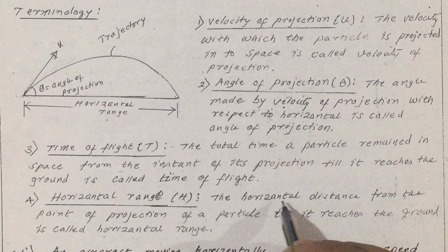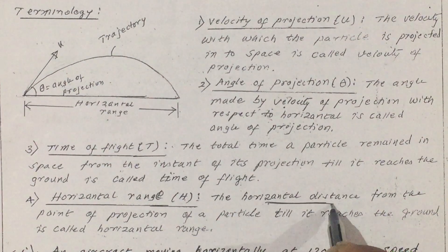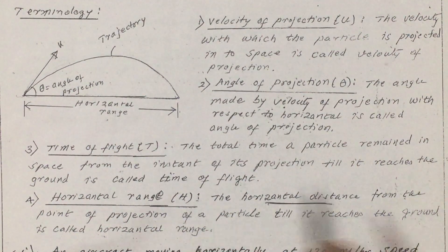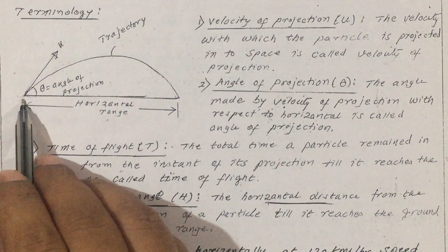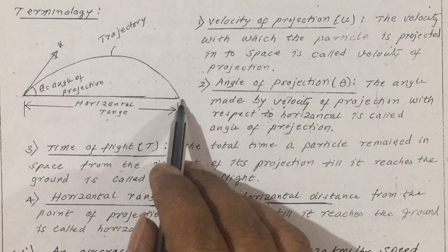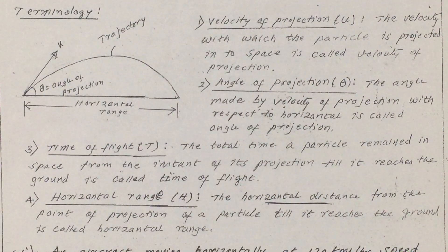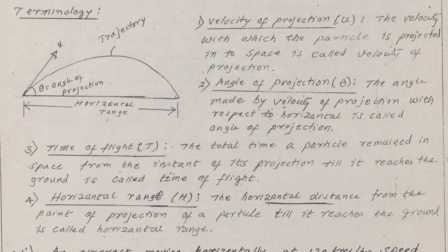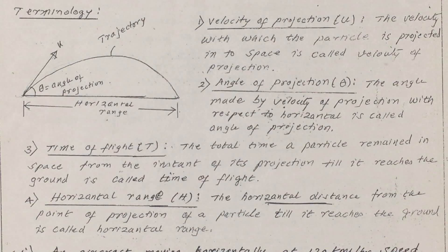The horizontal distance — please remember — the horizontal distance from the point of projection till it reaches the ground, we are going to call that as horizontal range. This is regarding projectiles. Thank you.